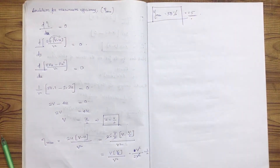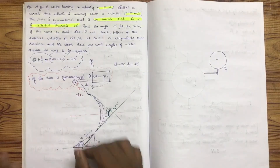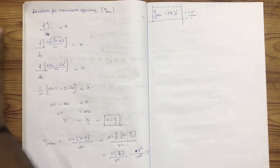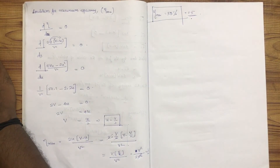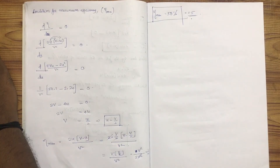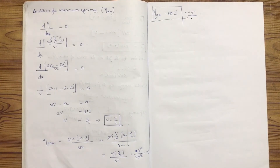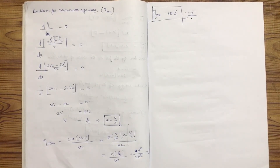The jet of water strikes a series of vanes. We will prove the maximum efficiency of a jet of water striking a series of vanes. The average energy at maximum efficiency is the same, and we will verify this for the series of vanes.